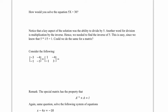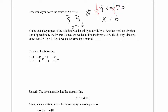How would you solve 5x equals 30? You could divide both sides by 5, but another way is to multiply both sides by 1/5 — the inverse of 5. One-fifth times 5 gives 1, so you get x equals 6. The key insight is that dividing by 5 is the same as multiplying by its inverse, 1/5, since 1/5 times 5 equals 1.